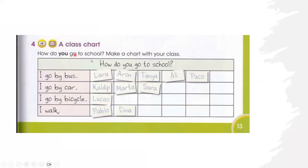A class chart. How do you go to school? Make a chart with your class. How do you go to school? I go by bus — Lara, Aaron, Tanya, Ali, Paco. They go by bus. I go by car — Kuludib, Marta, Sarah go by car. Lokas goes by bicycle. Pablo and Dina walk to school.